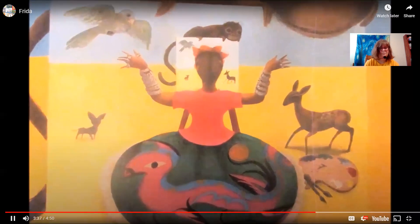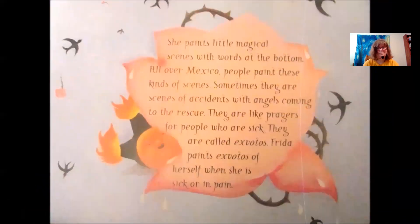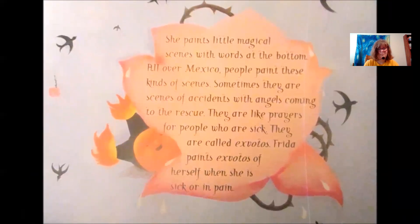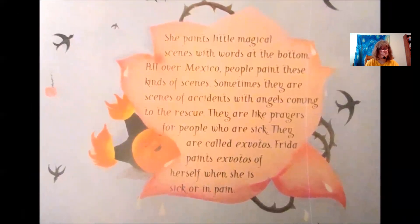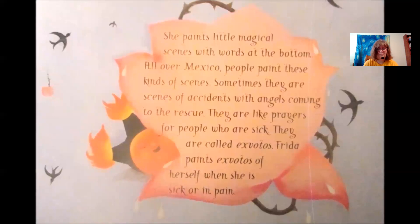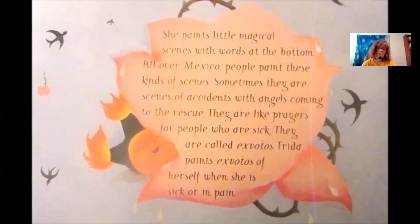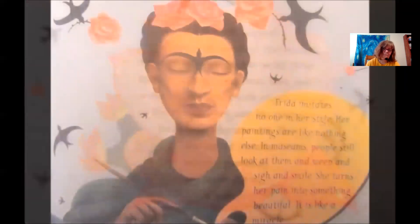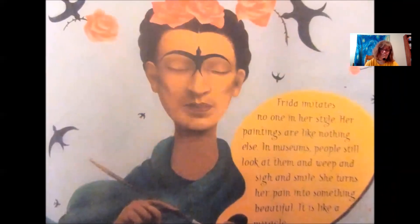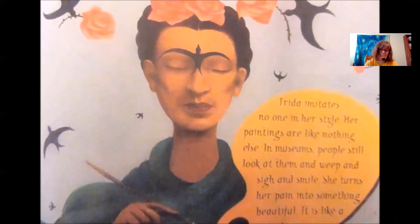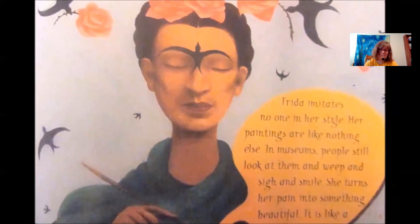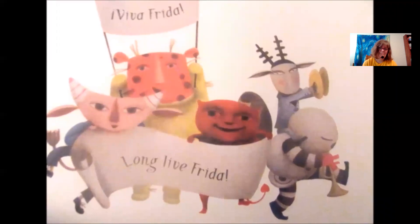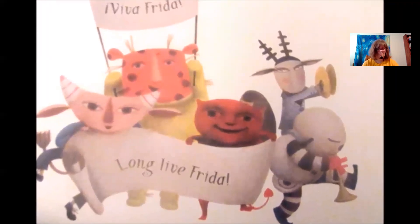It's almost like painting on photographs. She paints little magical scenes with words at the bottom — all over Mexico, people paint these kinds of scenes. Sometimes they are scenes of accidents with angels coming to the rescue, like prayers for people who are sick. They are called exvotos. Frida paints exvotos of herself when she is sick or in pain. Frida imitates no one in her style — her paintings are like nothing else. In museums, people still look at them and weep and sigh and smile. She turns her pain into something beautiful; it is like a miracle. Viva Frida. Long live Frida. The end.